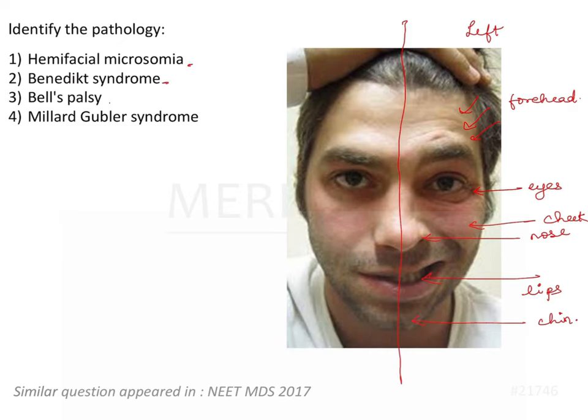The options given are hemifacial microsomia, Benedict syndrome, Bell's palsy, and Millard Gubler syndrome. Let's try to break down the options.